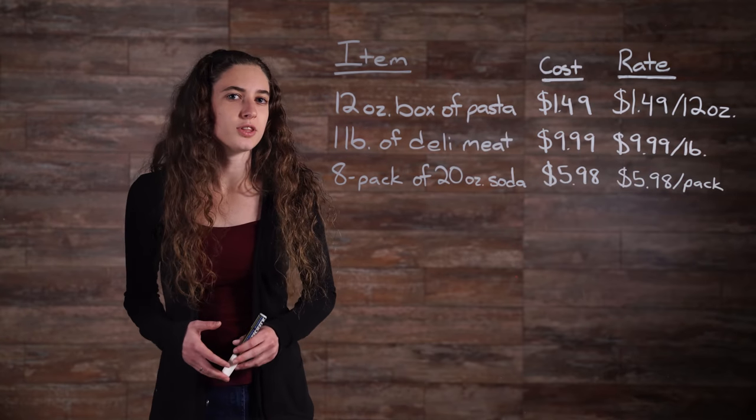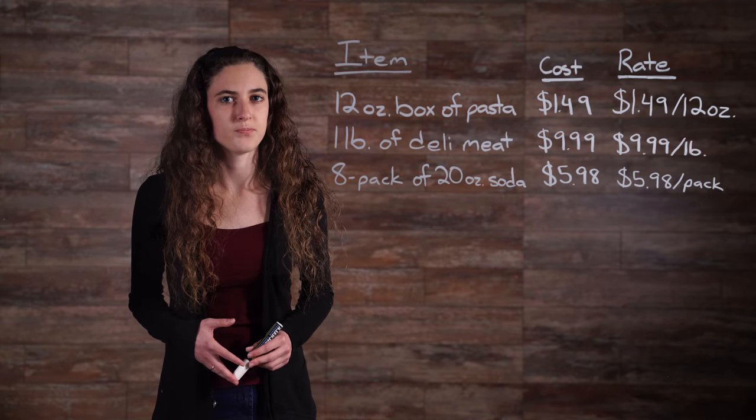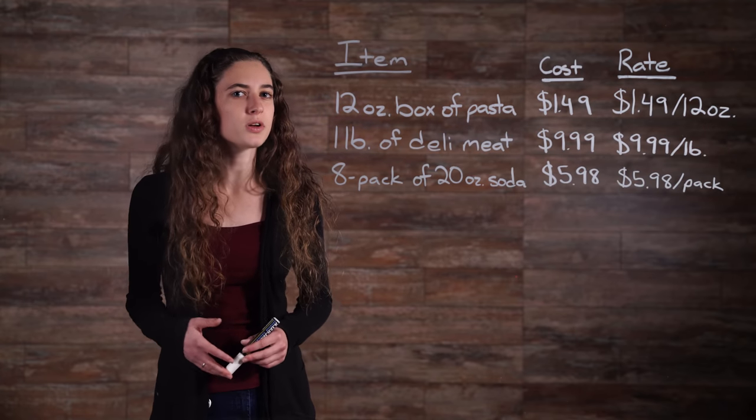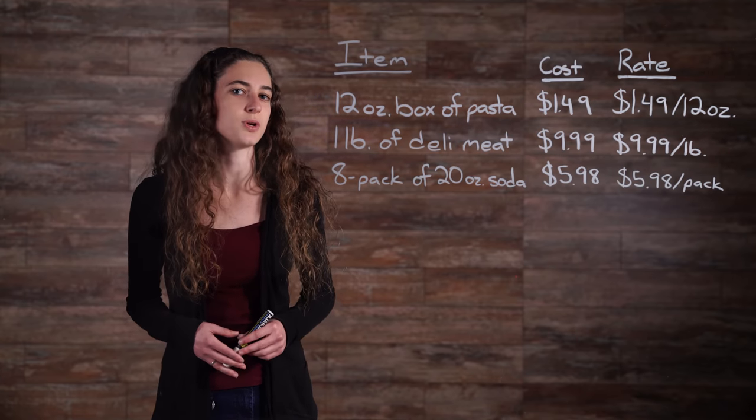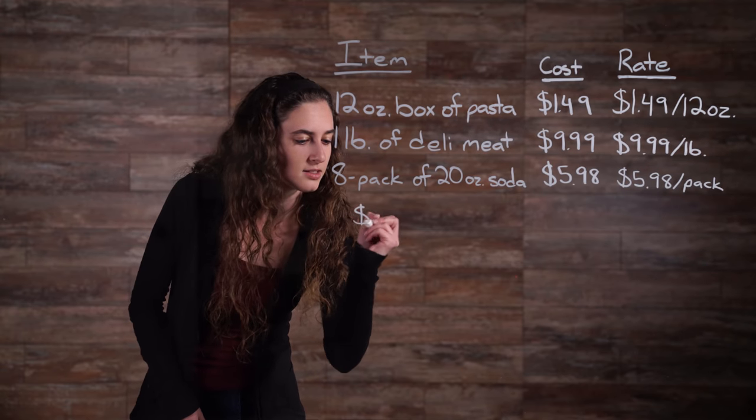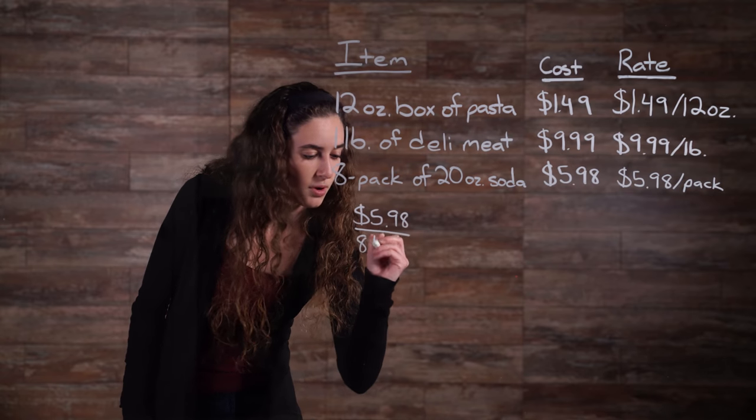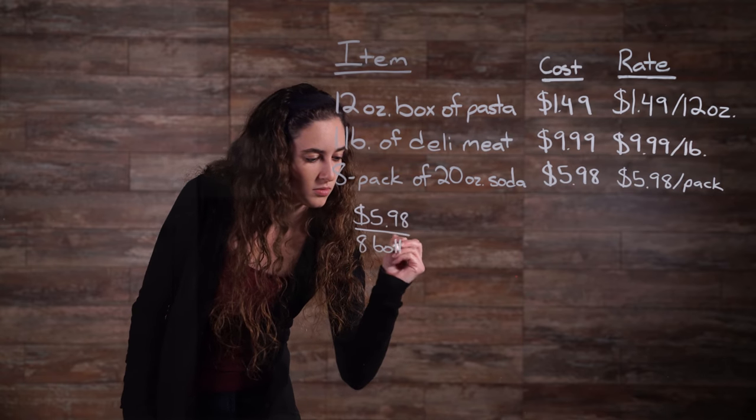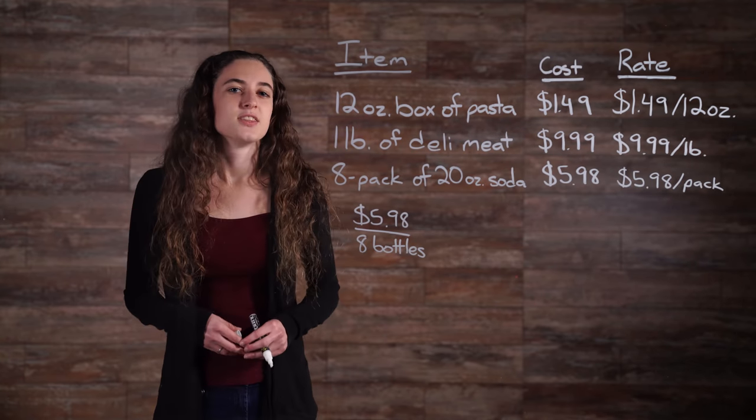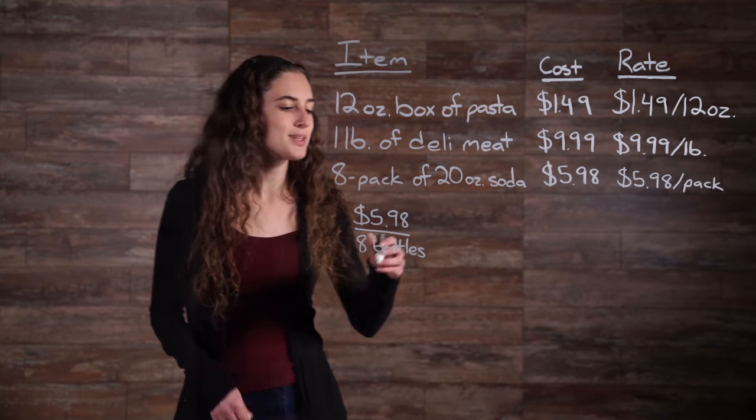If we look at this last example a little closer, we'll see that there is room to break down the rate even further. The example provides the price of an 8-pack, but what if I want to determine the cost of one 20-ounce bottle? The ratio of $5.98 to 8 bottles provides that information. This quick calculation tells me that each 20-ounce bottle costs approximately $0.75.